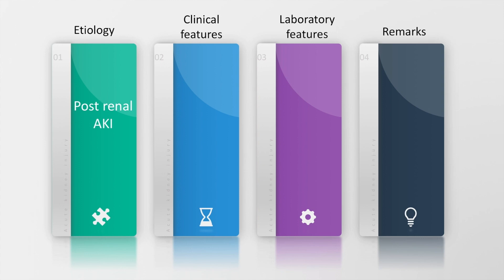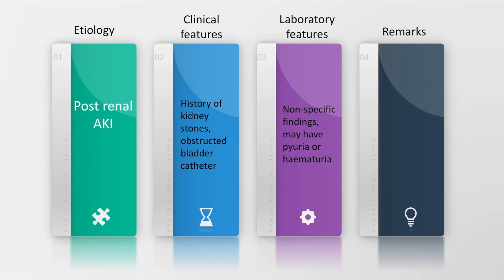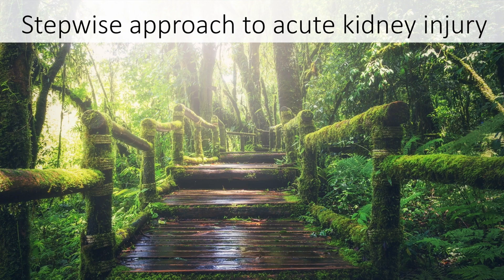Post-renal acute kidney injury may be preceded by a history of kidney stones, obstructed bladder, or use of catheters. Laboratory features include non-specific findings, and patients may have pyuria or hematuria. Diagnosis would depend upon imaging with ultrasound or computed tomography.